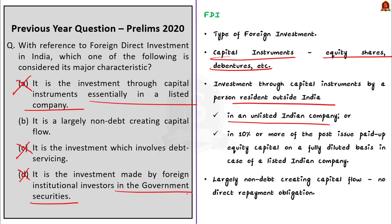Option 3 is also incorrect because debt servicing means the cash required to cover repayment of interest and principal — FDI is an investment option, not a debt servicing option. So A, C and D are incorrect, and option B is right. The second statement says it is a largely non-debt creating capital flow — FDI does not create any debt and there is no direct repayment obligation. In FDI and FPI there is no debt repayment obligation at all, so they are non-debt creating capital flows.